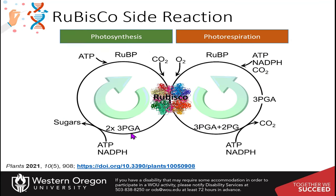Of note, the Rubisco enzyme can either be a carboxylase or an oxygenase. That oxygenase reactivity is a side reaction — in addition to producing two molecules of 3-phosphoglycerate when carbon dioxide gets fixed, Rubisco can also accept oxygen in the same type of reaction.